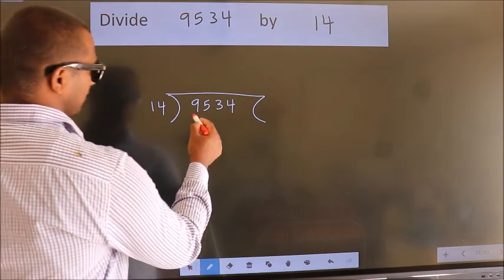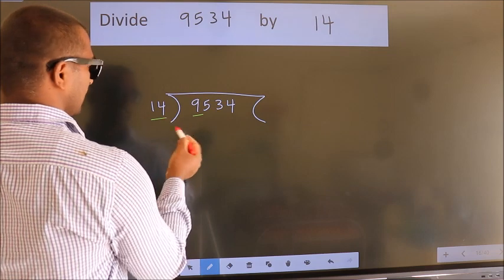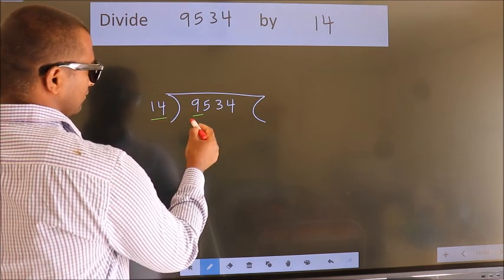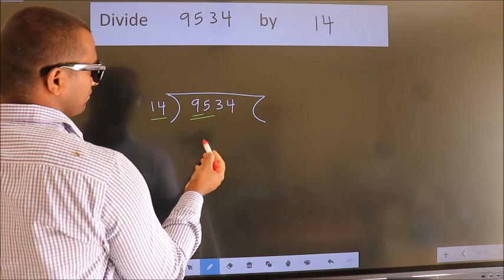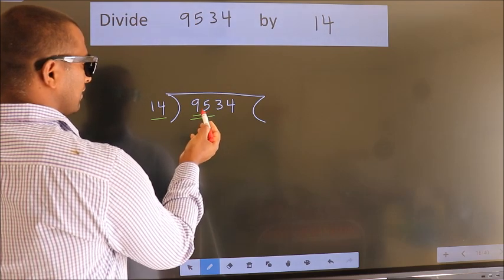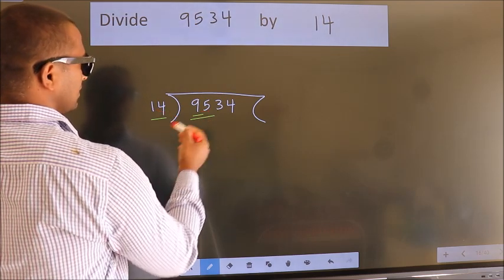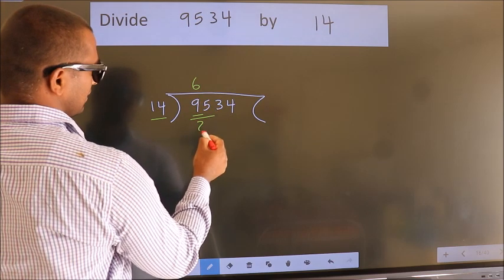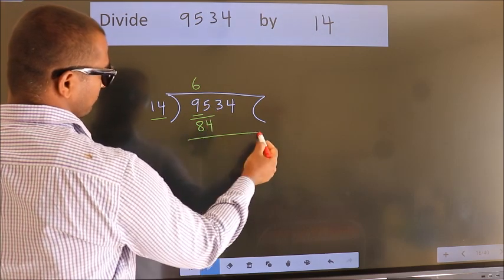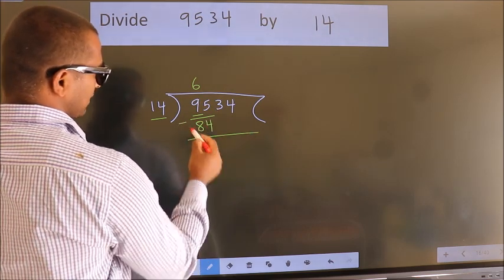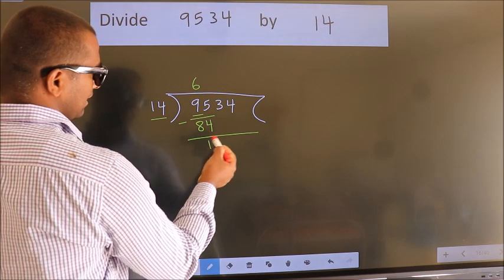Here we have 9. Here 14. 9 is smaller than 14, so we should take 2 numbers, 95. A number close to 95 in the 14 table is 14 times 6 equals 84. Now we should subtract. We get 11. After this,